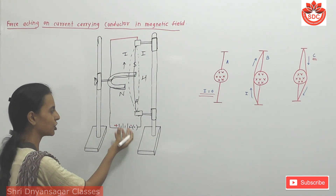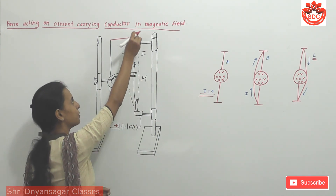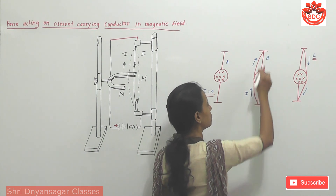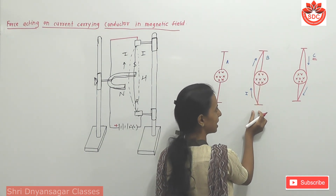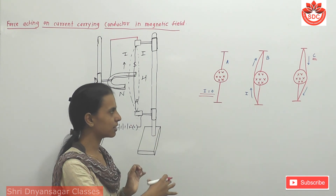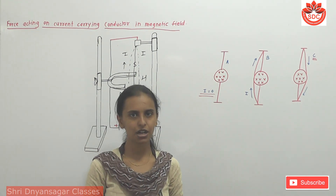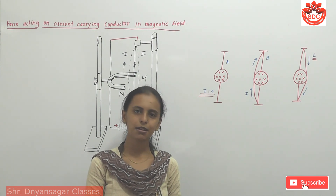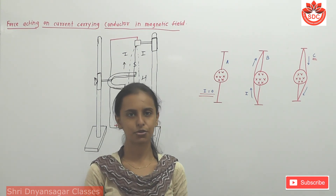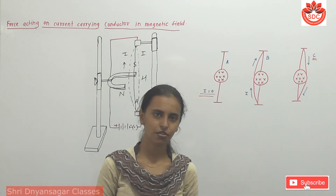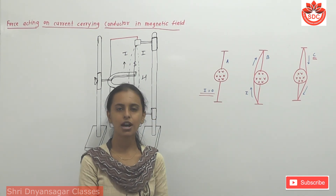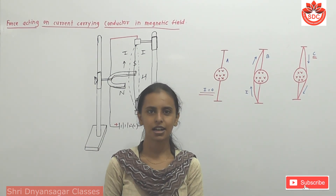Now when the current is reversed — negative terminal at top and positive terminal at bottom — the current flows from bottom to top. The magnetic field is produced and the force exerted on the wire causes deflection in the opposite direction. This demonstrates that the direction of deflection depends on the direction of the electric current.